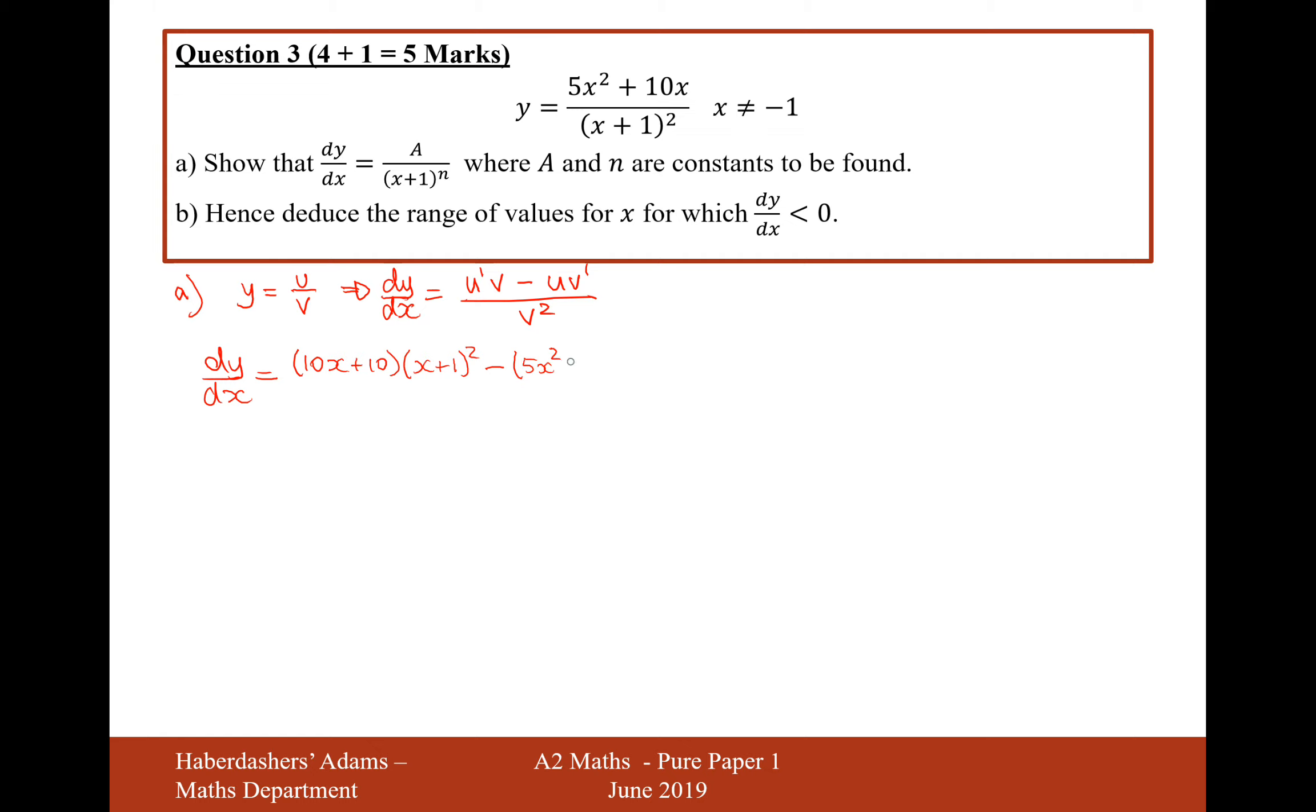then it's going to be the multiple of u, so that'll be 5x squared plus 10x. Then it's going to be v differentiated and that's going to be 2 lots of x plus 1. All over, it's going to be this function here squared, so it's going to be x plus 1 squared. So it's squared and then squared again, so that'll be to the power of 4 this time.